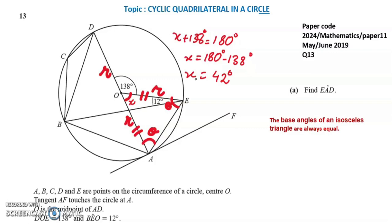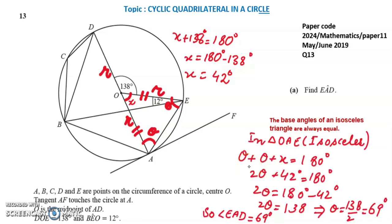By using the property of the triangle that sum of all the angles in a triangle is 180 degrees, theta plus theta plus x equals 180 degrees. We put the value of x which we already found, it is 42 degrees. After solving, we get theta equals 69 degrees. Since we had supposed theta in place of angle EAD, therefore angle EAD is equal to 69 degrees.